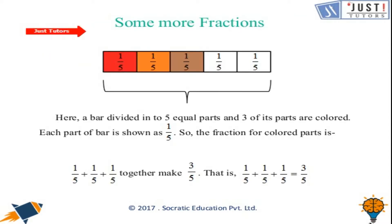Here we have some more fractions. A bar is divided into five equal parts and three of its parts are colored. Since it is divided into five equal parts, the denominator is five. Since three parts are colored, it is written as three-fifths. Each part of the bar shows one-fifth.